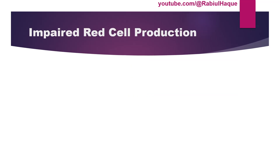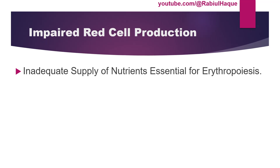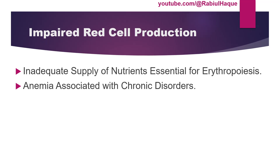Regarding impaired red cell production, this can happen due to several reasons. If there is inadequate supply of essential nutrients required for erythropoiesis, anemia can develop — for example, in iron deficiency, vitamin B12 deficiency, folic acid deficiency, and protein-calorie malnutrition. Anemia can also be associated with certain chronic disorders, including infection, connective tissue disorders, and disseminated malignancy. In these chronic disorders, there is sufficient iron in the body, but that iron is not allowed to be utilized in the production of hemoglobin.